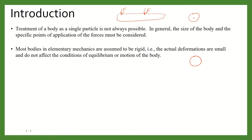Suppose a force is acting on a body. It is possible that because of the force the body might deform and its shape changes. But in rigid body mechanics we consider that the body will remain rigid — the shape before and after application of the force will remain the same. That means there are no deformations, or the deformations are small and do not affect the conditions of equilibrium or motion of the body.